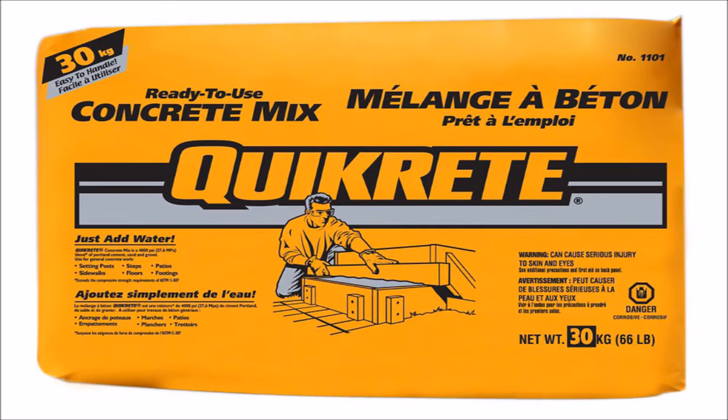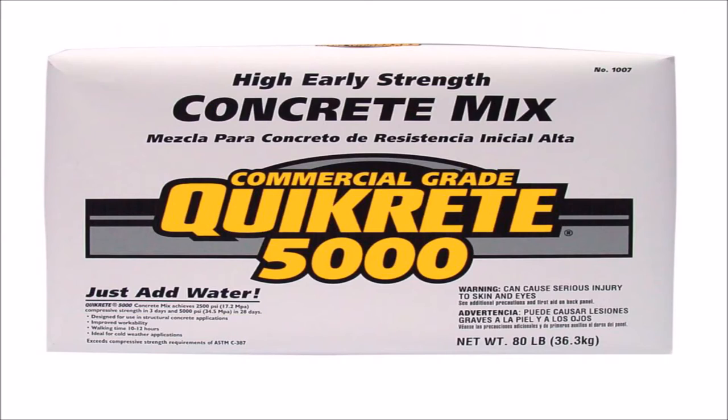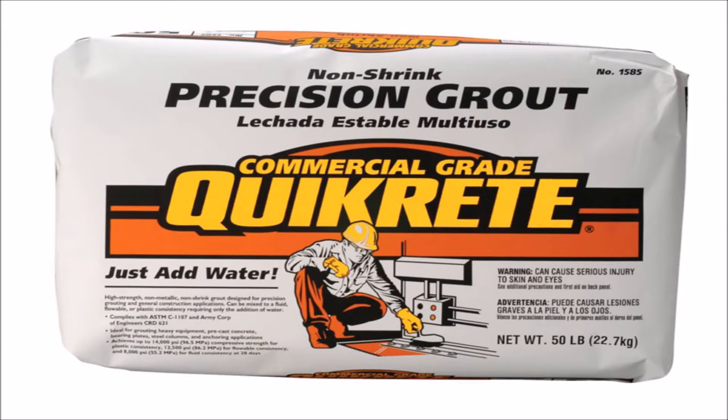To fill the blocks I used a mixture of three parts standard ready to use concrete mix, the stuff with the aggregate already in it, as well as one part high early strength concrete mix. I also added about half a bag of precision grout. In addition, I dumped in whatever mortar I had left over. I mixed it up so that the consistency was relatively thin so that it would flow easily into the spaces.